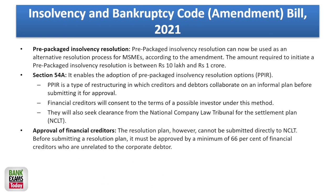An important amendment added the Pre-Packaged Insolvency Resolution Process (PPIRP) for MSMEs. This applies when the default is between 10 lakh and 1 crore rupees. The procedure is quite different. If the default is between 10 lakh and 1 crore, then PPIRP applies. If it is above 1 crore, then CIRP applies.